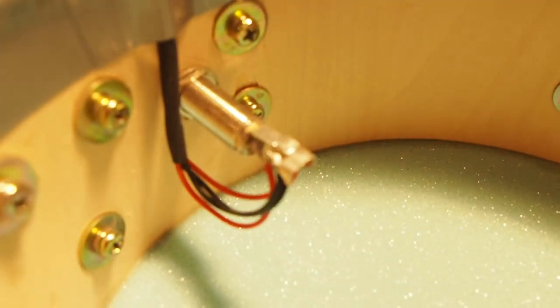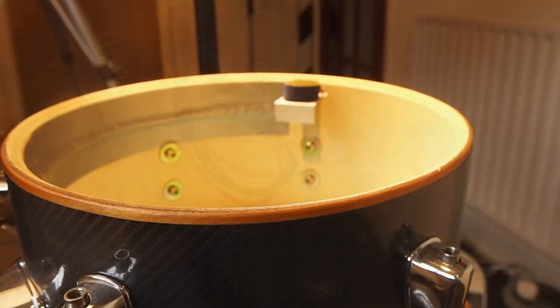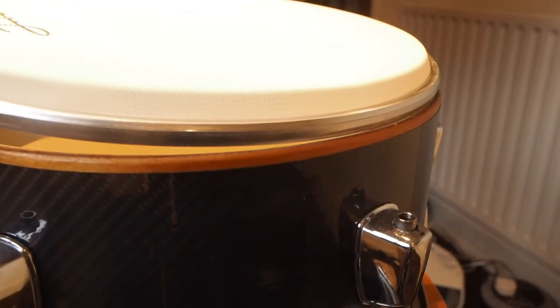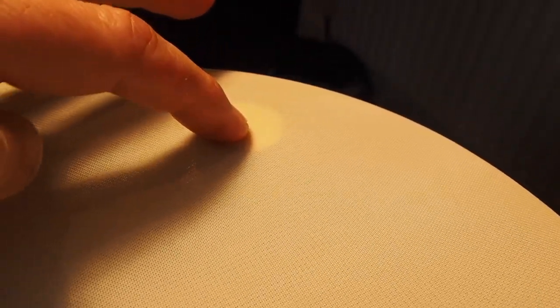Because the brass is in direct contact with the mesh head. Here is the stereo jack socket going through the shell, and all the wires are soldered on in the way I have described. The head is fitted in the normal way, and there you can see the head piezo directly underneath the mesh.